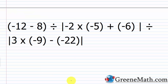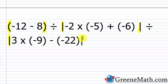For the final problem, we have this quantity: negative 12 minus 8, then we're dividing by the absolute value of negative 2 times negative 5 plus negative 6. Then we're dividing by the absolute value of 3 times negative 9 minus a negative 22. We have grouping symbols here — the absolute value bars serve as grouping symbols. This tells us to figure out what each part is separately before you do any of the division.